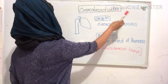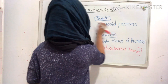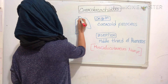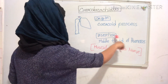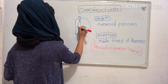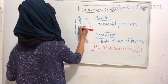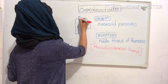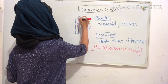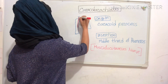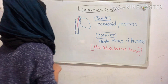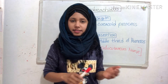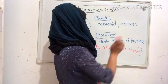Now we will see our next muscle, coracobrachialis. Coracobrachialis originates from the coracoid process — this is the coracoid process. Its insertion is into the middle third of the humerus. This is our coracobrachialis muscle; it also helps flex the forearm and is also supplied by the musculocutaneous nerve.